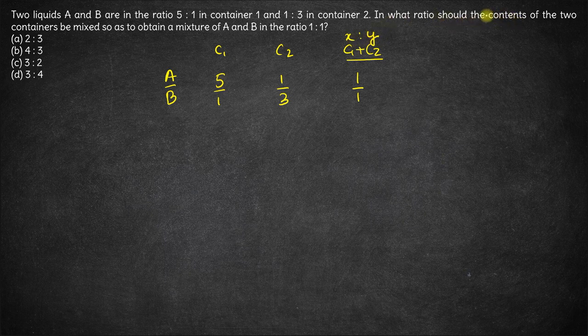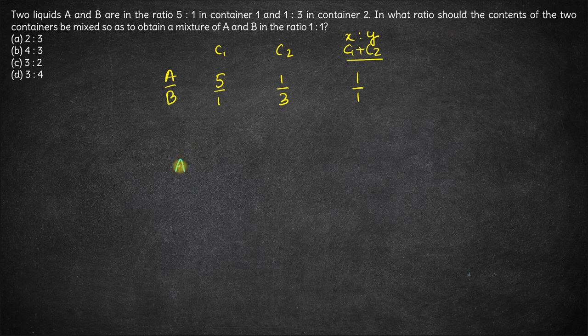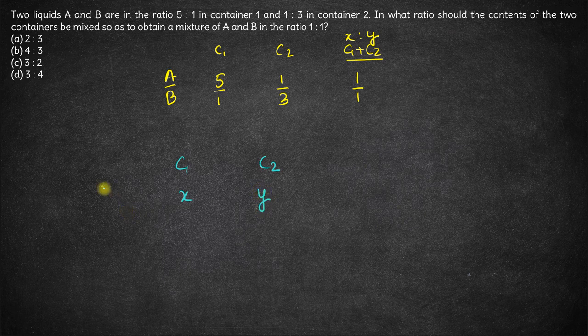What is the ratio of the contents of the two containers to be mixed to obtain a 1 is to 1 mixture? This is a very simple allegation question. You have two containers C1, C2. The quantity is x and y.